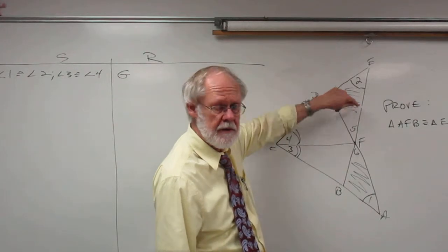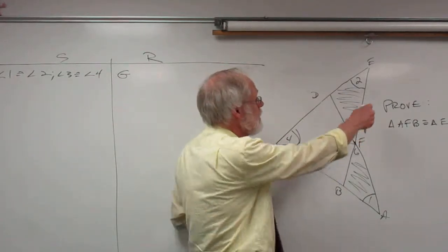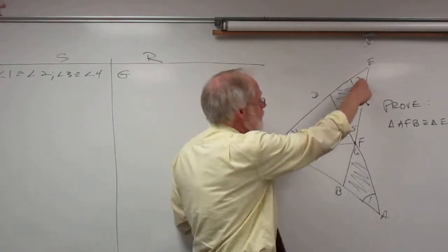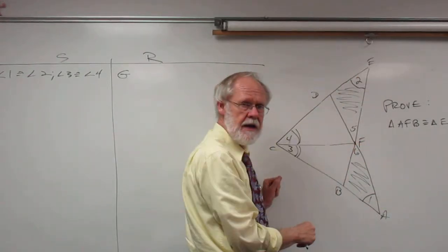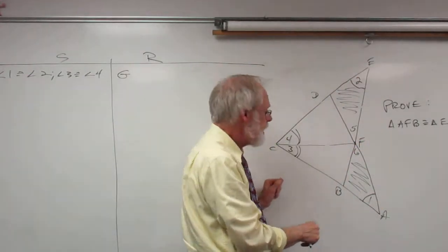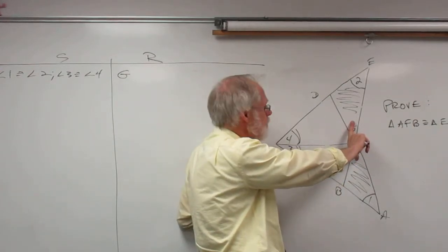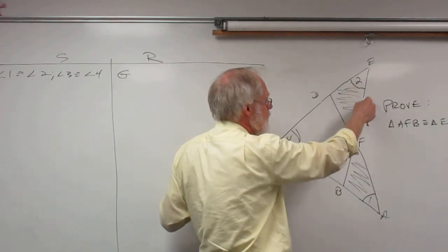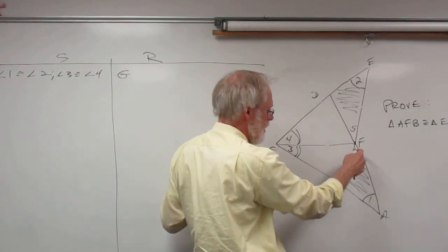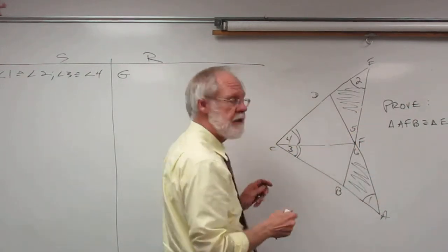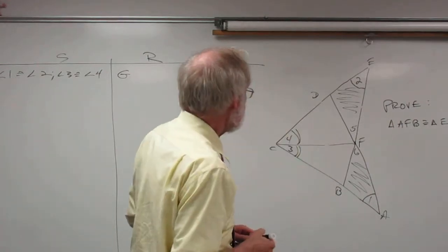If we can get EF congruent to AF out of the big triangles, and get these vertical angles congruent, then we'll have angle-side-angle to angle-side-angle and we can prove the two smaller triangles congruent.